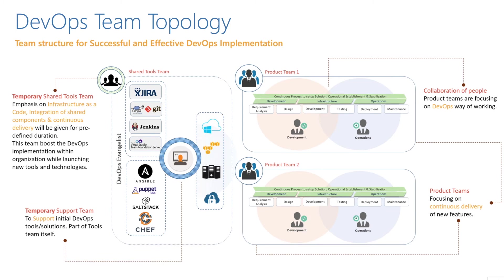Let's look at a typical DevOps team topology — how you set up your teams across dev and ops. There can be multiple product teams working on multiple features — for example a Feature One team, Feature Two team, Product One team, or Product Two team.